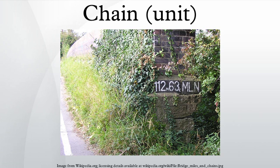Ramsden's Chain. American surveyors sometimes used a longer chain of 100 feet, also of 100 links, known as the Engineer's Chain or Ramsden's Chain. The first such was constructed by Jesse Ramsden for the measurement of the Hounslow baseline at the start of the Anglo-French survey. The term chain in this case usually refers to the measuring instrument rather than a unit of length. The distances measured with such an instrument are normally measured in feet. The unit symbol for a single Ramsden's link is LK.